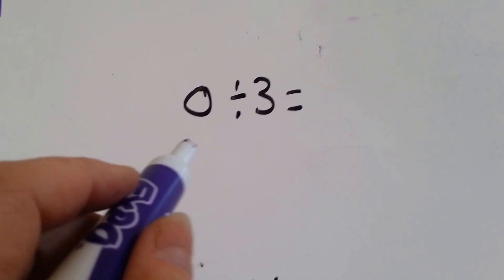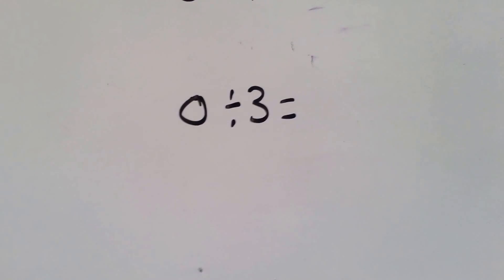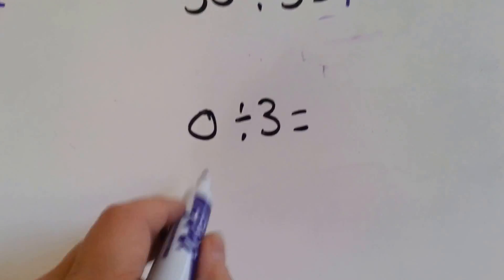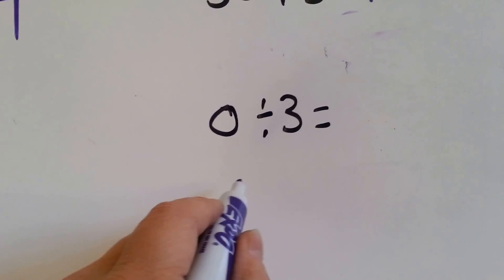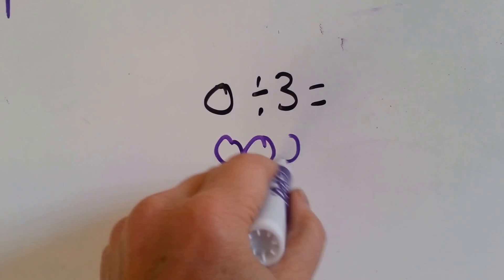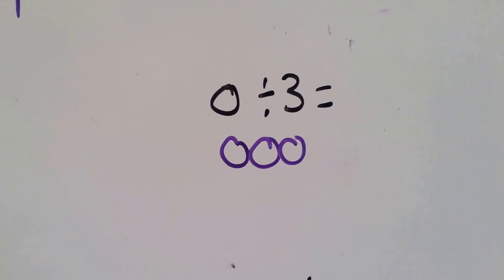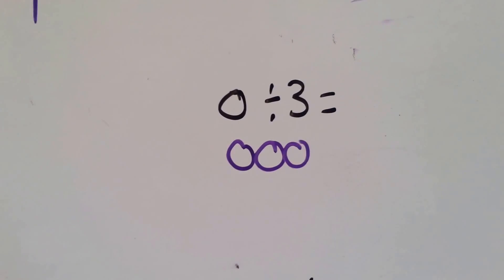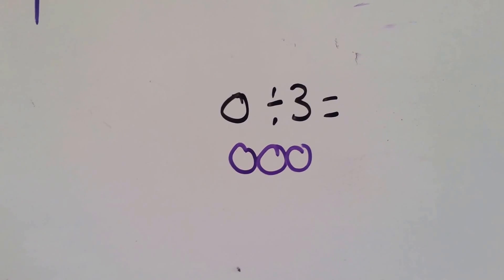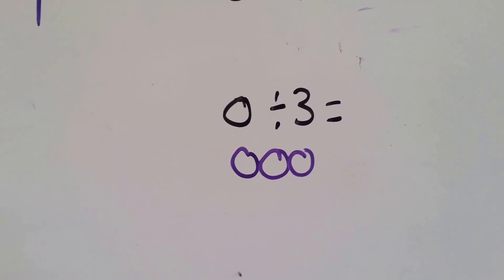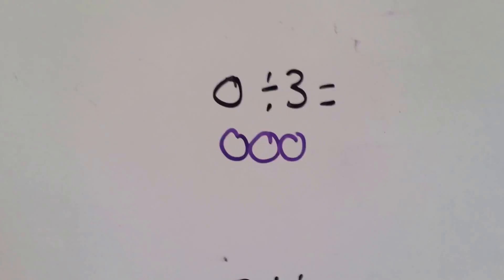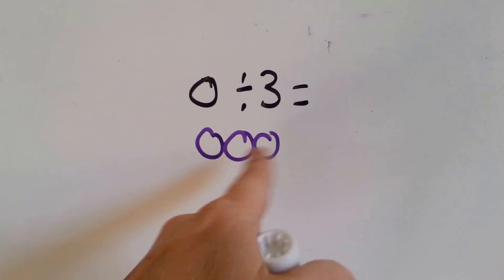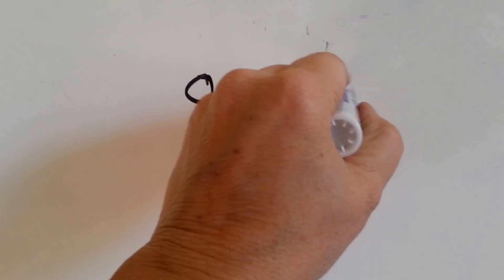What if you had 0 and you divided it into 3 groups? I have no dots, but I'm going to put them in 3 groups — there are no dots in them. What is 0 divided into 3 groups? How many dots are in there? 0.